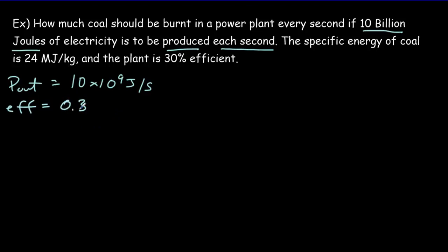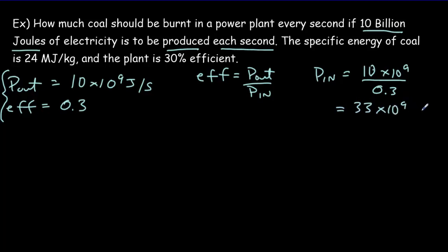Our efficiency, that's the 0.3. Immediately I see here that I can work out the input power, because efficiency is equal to the output power—the good stuff that comes out—versus the input power, what you've got to give up. That means our input power must be equal to the output power over the efficiency, or 10 times 10 to the ninth power divided by 0.3. If you work that out, you get 33 times 10 to the ninth power of joules every second. In other words, 33 gigawatts of power have to be input from the fuel into the power plant.